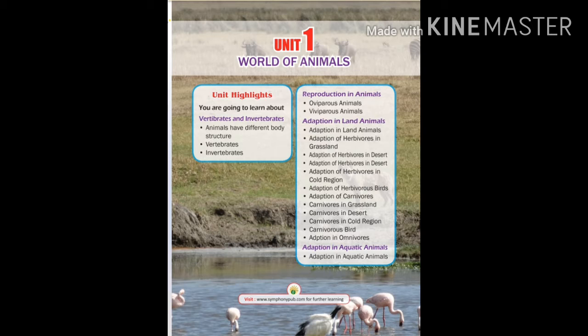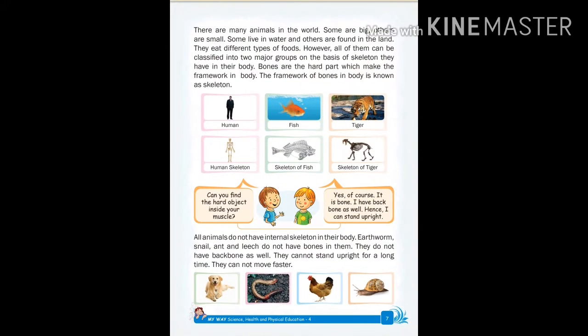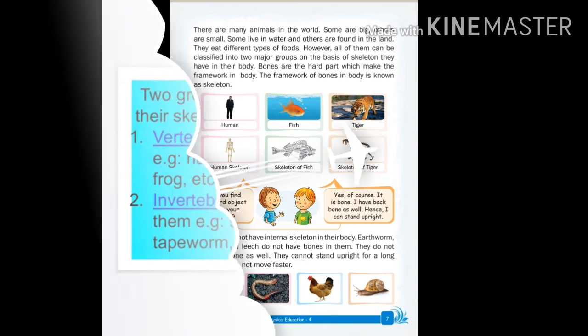We will start from Unit 1: World of Animals, Chapter 1 — Vertebrates and Invertebrates. We all know that there are many animals in the world. Some are big and some are small, some live in water and some on land. However, they can all be categorized into two major groups based on the skeleton they have in their body: vertebrates and invertebrates.